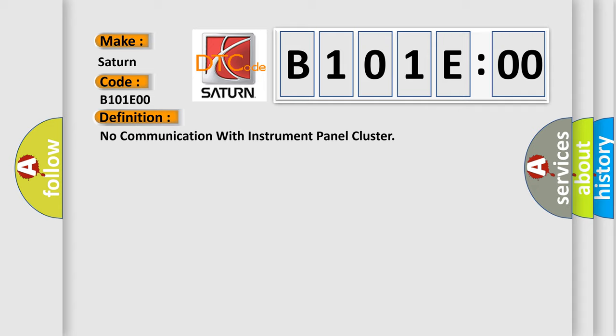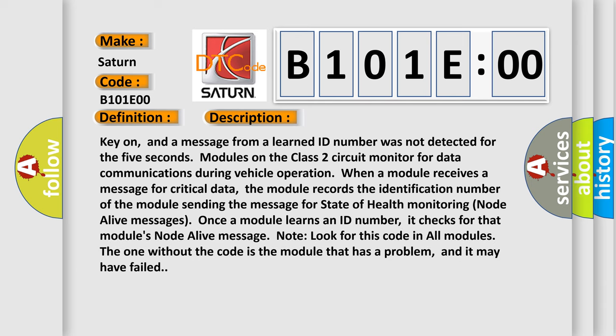And now this is a short description of this DTC code. Key on, and a message from a learned ID number was not detected for five seconds. Modules on the Class 2 circuit monitor for data communications during vehicle operation. When a module receives a message for critical data, the module records the identification number of the module sending the message for state of health monitoring node alive messages. Once a module learns an ID number, it checks for that module's node alive message. Look for this code in all modules. The one without the code is the module that has a problem, and it may have failed.